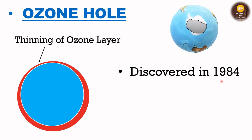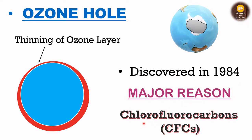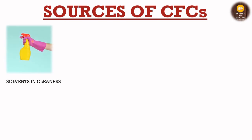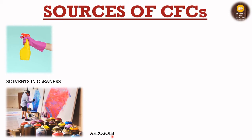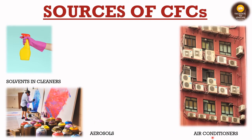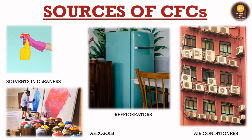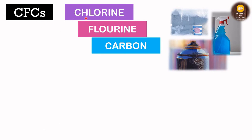The ozone hole was first discovered in 1984 — remember this clearly as it has been asked in many examinations. The major reason behind the ozone hole is chlorofluorocarbons, or CFCs. The sources of CFCs include: solvents in cleaners, aerosols (colloidal suspensions of particles dispersed in air — those spray containers used in painting), air conditioners, refrigerators, and the foam used to make plastics. CFC is a combination of chlorine, fluorine, and carbon.